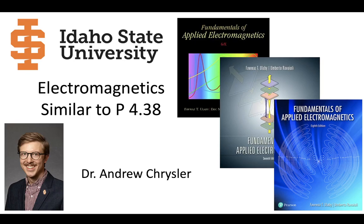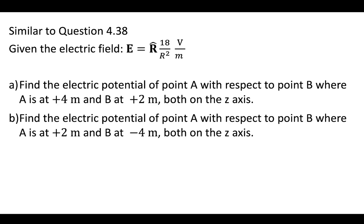This problem gives us an electric field that is in spherical coordinates. We can see that this is in spherical coordinates because of that big R. We are given an electric field in spherical coordinates, and then we're asked to find the potential at point A with respect to point B in two different cases, where the points are given on the z-axis.